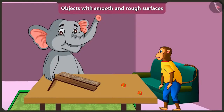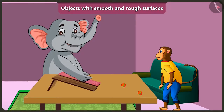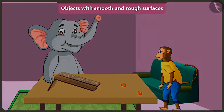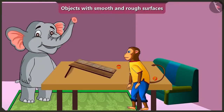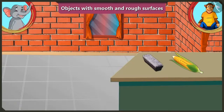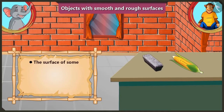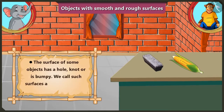Come on, now touch and feel the slope. Oh, its surface is too rough. Yes, correct — this slope has a rough surface, which means this is a rough surface. Appu, when the surface of an object has a hole, knot, or if it is bumpy, we call that surface a rough surface. Which means the surface is rough and our hand cannot slide on it easily.